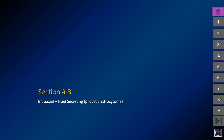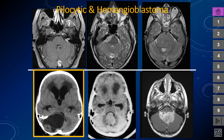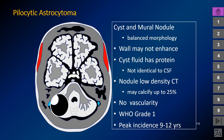Turning to intraaxial lesions associated with fluid secretion: the pilocytic astrocytoma and the hemangioblastoma. These should be called fluid-secreting lesions rather than cystic lesions, since a cyst by definition is a fluid-filled space lined by an epithelium, and this fluid is exophytic to the neoplastic component. The pilocytic astrocytoma classically has a solid enhancing nodule with a peripheral fluid collection. There may or may not be enhancement in the wall. The fluid contains protein so it is not identical to CSF. The nodule may calcify in up to 25% and tends to have slightly increased diffusion because it contains microcysts.